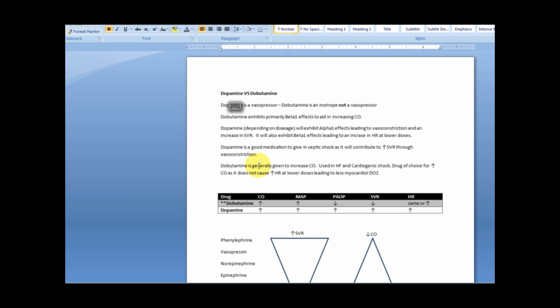Dobutamine, on the other hand, is generally given to increase cardiac output. It's used in heart failure and cardiogenic shock. Because at these doses, it will lead to less myocardial oxygen demand. So that's great in heart failure and cardiogenic shock.